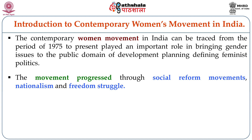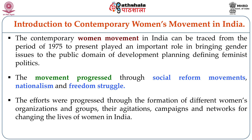The reform movement addressed specific issues of women like sati, women's education, early marriage, child marriage, and widow burning. During the national movement, feminists also engaged with the notion of women's rights and how those get located within the national freedom movement and later into nation building. The efforts progressed through the formation of different women's organizations, promoted by different women leaders and groups. Strategies included agitations, campaigns, and networks, which also changed the lives of women activists themselves and informed the constitutional guarantees and legal frameworks adopted by India after independence.